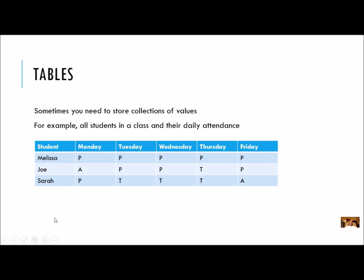I could have a list for my student, a list for Monday, Tuesday, Wednesday, Thursday, and Friday, and keep them straight so that all the zero indexes are Melissa, ones are Joe, and twos are Sarah. That would work, but that's still a lot of lists to work with.